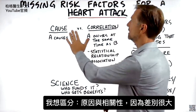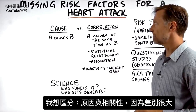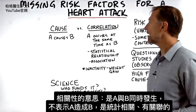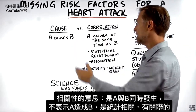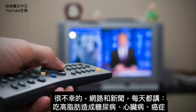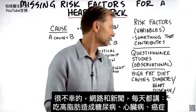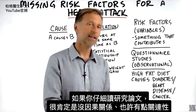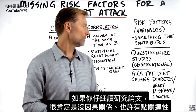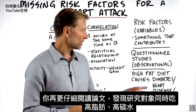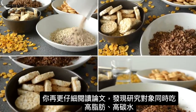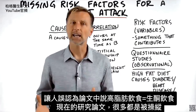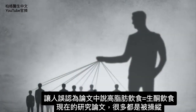I want to touch on the difference between cause and correlation, because there is a big difference. When something causes something, it would be like A causes B. But when something is correlated, A might occur at the same time as B, but that does not mean it caused B — it's a statistical relationship, an association. Every day on the news or the internet, you'll see things like "high fat diet causes diabetes or heart disease or cancer" — implying causation. But when you read the study, it has nothing to do with causation. There might be an association, but the person wasn't just on a high fat diet; there were other variables, like they were also on a high carbohydrate diet at the same time.